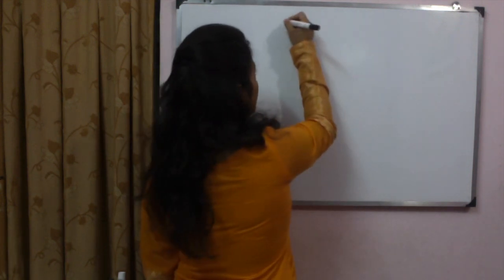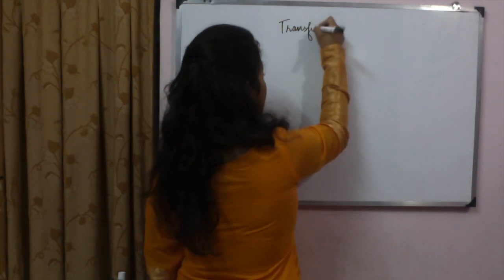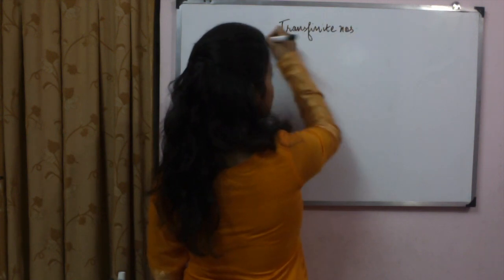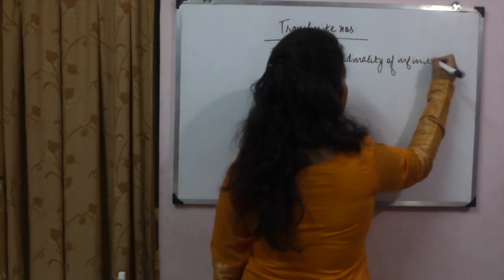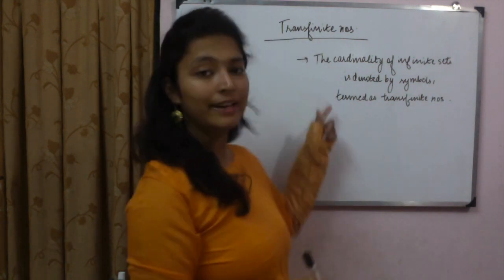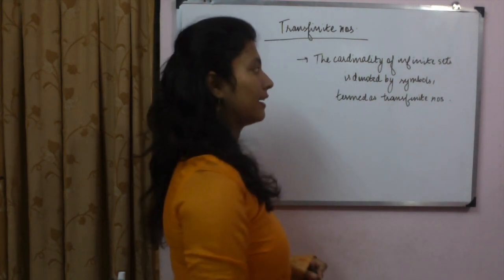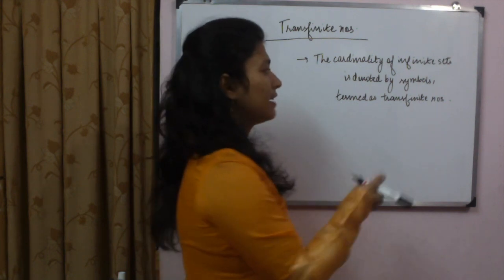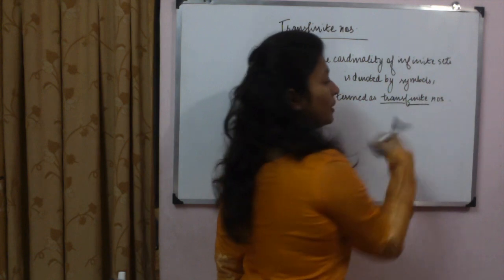To avoid confusion, we use different numbers for small and big infinite sets, which we call transfinite numbers. These are very special numbers and they do a lot of work in real analysis. Transfinite numbers denote the cardinality of infinite sets — they go beyond finite numbers.